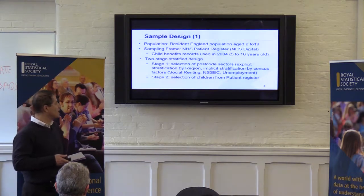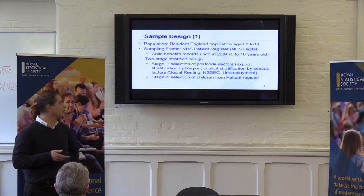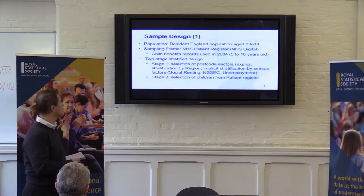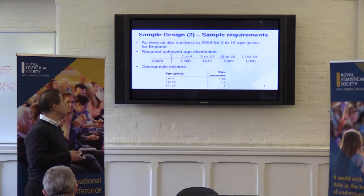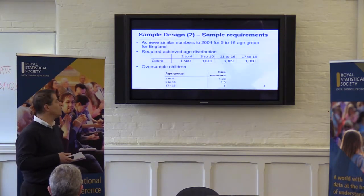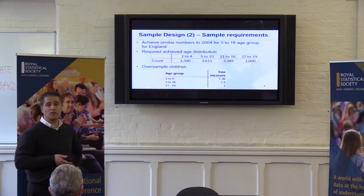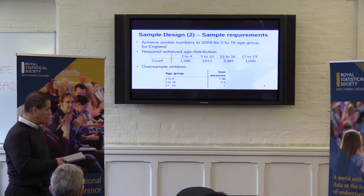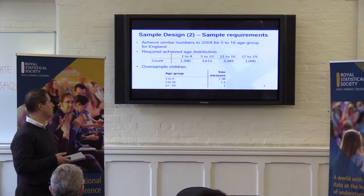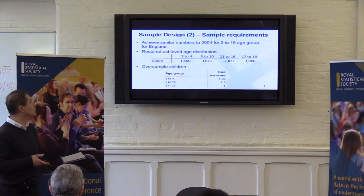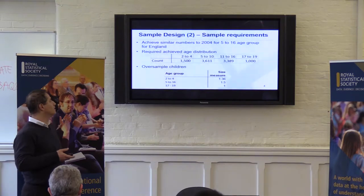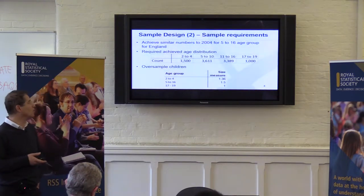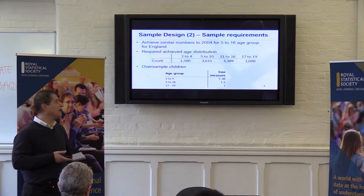This allowed us to have a sample with good coverage in terms of geography as well as socioeconomic factors. In the second stage, we selected the children from the patient register. This was done by NHS Digital. In terms of what we wanted to achieve, we wanted similar numbers to what was achieved in 2004 for the age group 5 to 16 — about 7,000. So we wanted about 3,600 in the 5 to 10 age group and about 3,400 in 11 to 16, and about 1,500 in the 2 to 4 and 1,000 in the 17 to 19 age group.